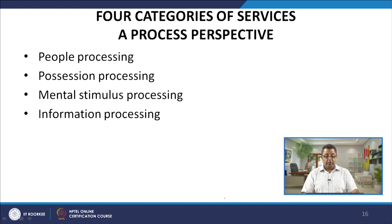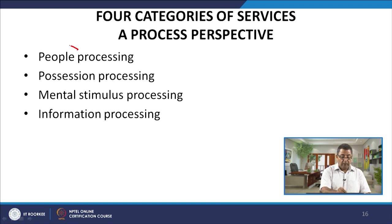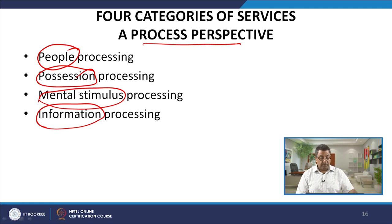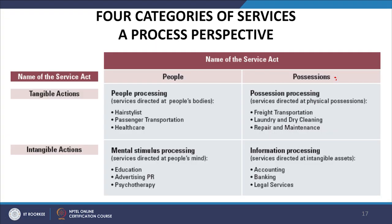There are four categories of services from a process perspective: people processing, possession processing, mental stimulus processing, and information processing. In the first case people are being processed, in the second possessions, in the third mental stimulus, and in the fourth information. In this matrix, one axis is the nature of the service act — whether people or possessions are being processed — and the other axis is whether tangible or intangible actions are taking place.